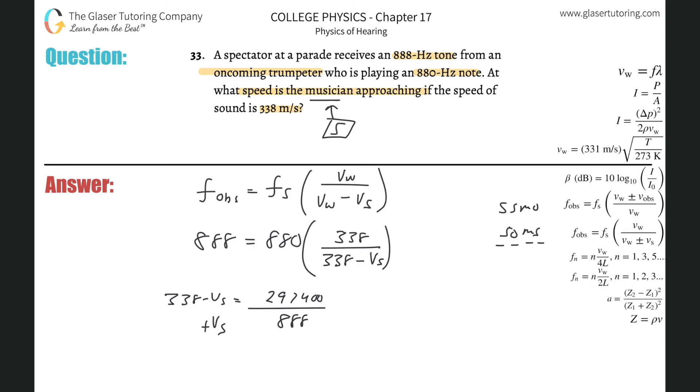Just thinking through the math here, I can add this term V sub s over to this side, and if I do that then I have to subtract this value over to the left. So it's basically going to be the velocity of the source is going to be equal to 338 minus this division, 338 minus that value 297,000 about divided by 888.